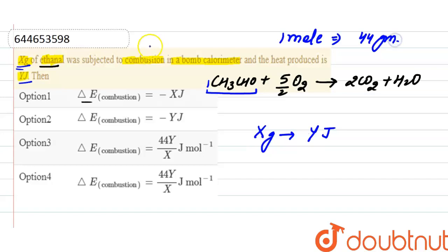It will be 12 plus 3 plus 12 plus 1 plus 16 and it is 44 gram. So for 1 mole, that is 44 gram of ethanol, the heat produced will be: for 1 gram it will be Y divided by X, and for 44 gram it will be Y divided by X into 44.